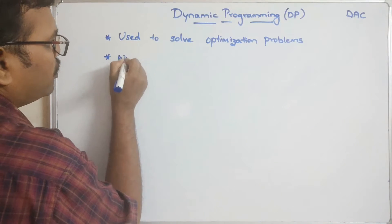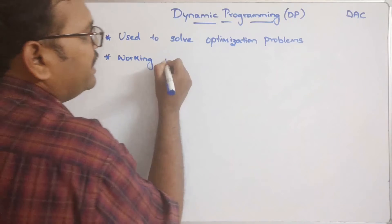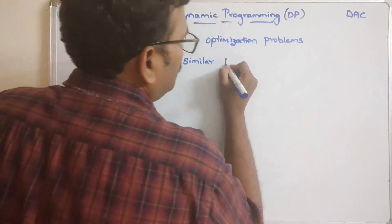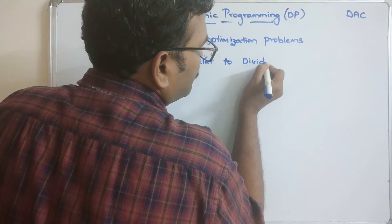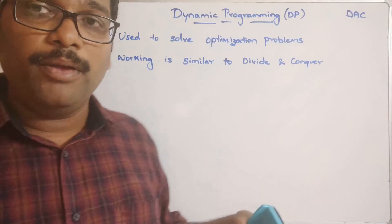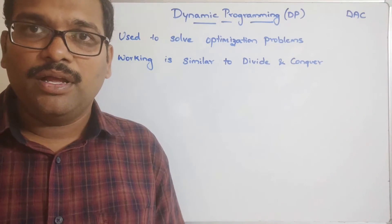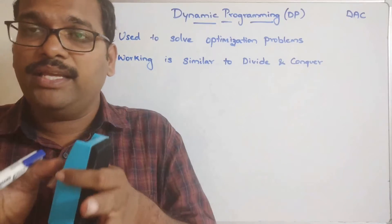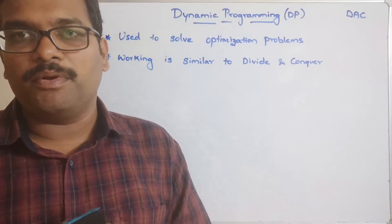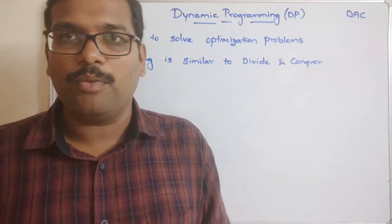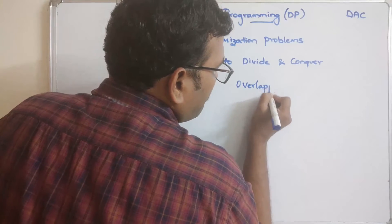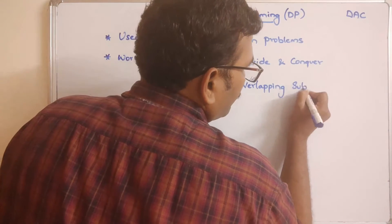The working of dynamic programming is similar — not equal, but similar — to divide and conquer. That means here also the complete problem will be divided into sub-problems, similar to divide and conquer. But the key difference is that the division should be done with overlapping sub-problems.